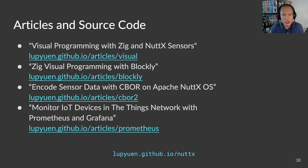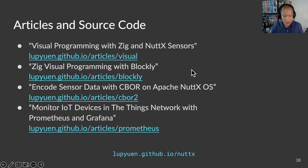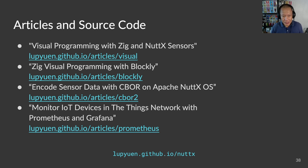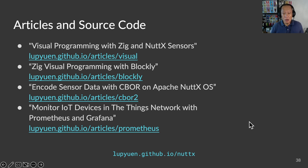In this presentation, we have covered many topics. Everything I've covered is explained in these articles, including the source code — visual programming, Zig and Blockly, CBOR encoding, Prometheus, Grafana, and the Things Network. If you would like to download the presentation slides, please head over to this link: labyuan.github.io/nuttx — that's the letter L, not the digit one. All my presentations, articles, and source code are available at that link.